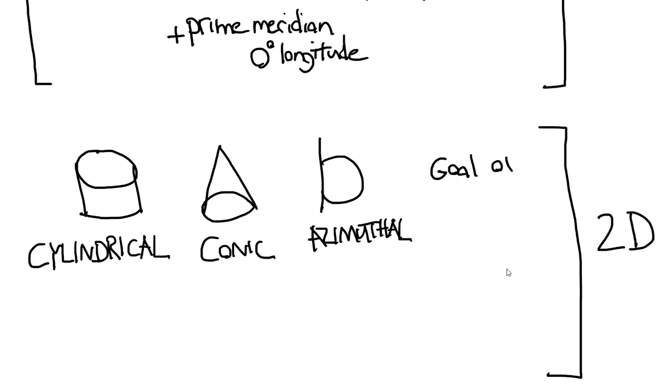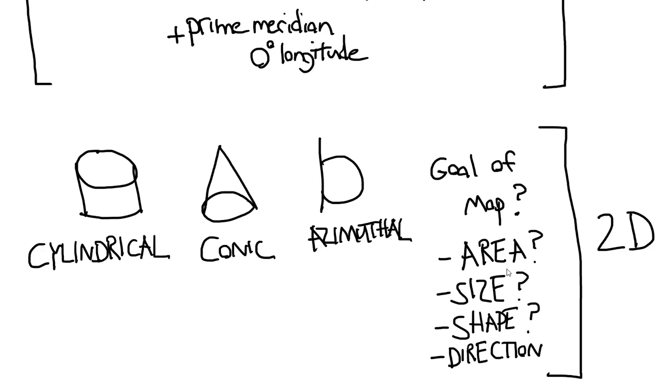The most critical thing to think of with the selection of one of these projections is what is the goal of the map? Are you trying to preserve the area? Are you trying to preserve the size, the shape, or the direction? Because with any of these projections, there's going to be some distortion. As we've seen with other videos and examples, you cannot take a 3D object and turn it into a flat surface without some kind of distortion taking place. And so the user has to know what the goal of their map is when they select the projection. Is it a map that's going to be showing more of a global view? Or is it something that is required or needed to show local information and local data? And then you can make your selection for the type of projection you're going to use.